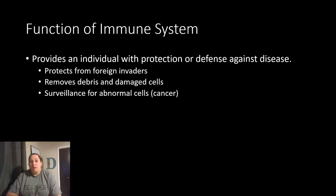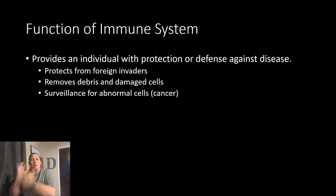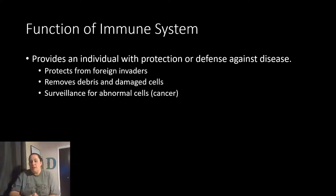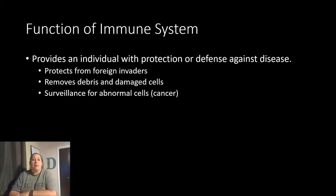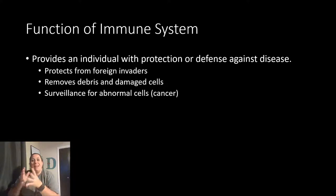The immune system also does surveillance. Some of your immune system cells are taught what your cells look like and what a foreign invader looks like. However, sometimes your cells mutate — like in the case of cancer — and so these immune system cells are going to be on surveillance looking for any of those changes that might occur and get rid of those cancer cells, hopefully before they become a big problem. That is the overall role of the immune system, if it's working properly.